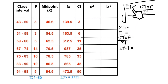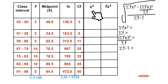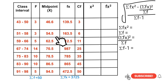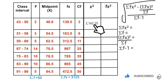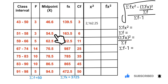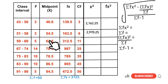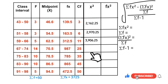We're going to generate values for each of these variables. We have the x² column — x² simply means the square of each of the midpoints. First row: 46.5² gives 2162.25, followed by 54.5² gives 2970.25, 62.5² — we're going to fill the rest of the spaces by taking the square of each of these midpoints.